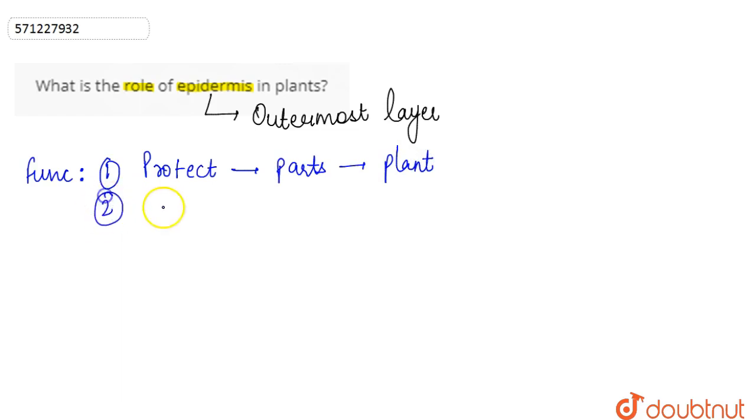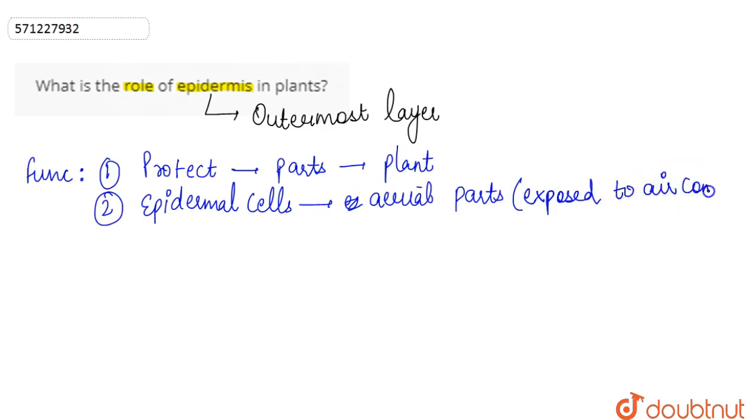Other than this, the epidermal cells on the aerial parts of the plant – the aerial parts are those parts of the plant that are exposed to air completely, such as stem or leaves.